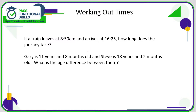Let's take a look at working out times — you might have to work out how long a journey takes. It's worth doing this as a timeline. So if a train leaves at 8:50 and arrives at 16:25, I'm going to write 8:50 and 16:25. What I'm looking for is full hours between these two times. Between 8:50, the next full hour is 9 o'clock.